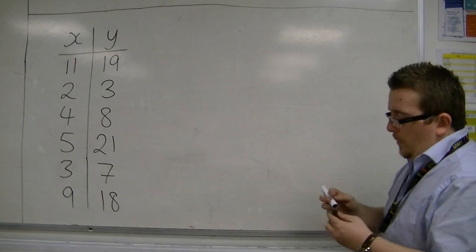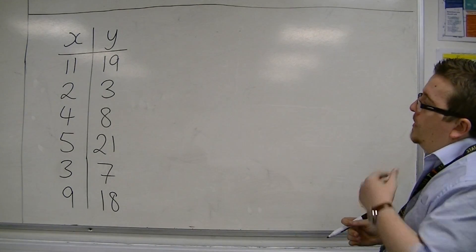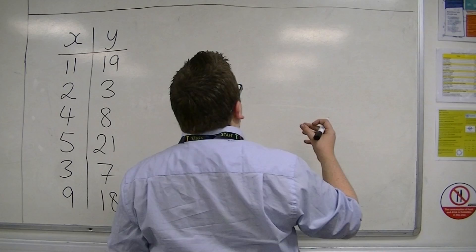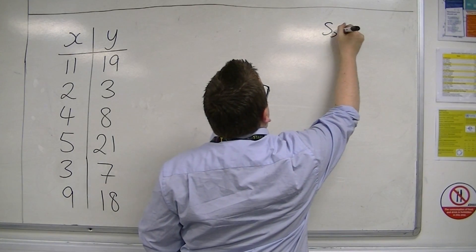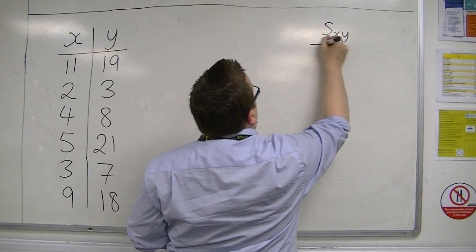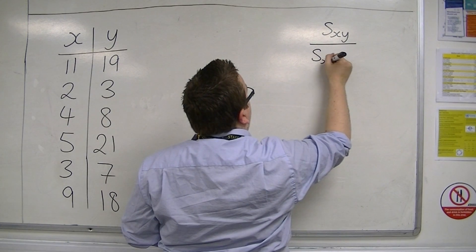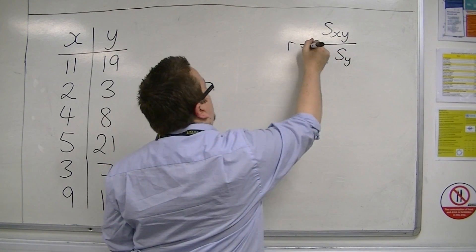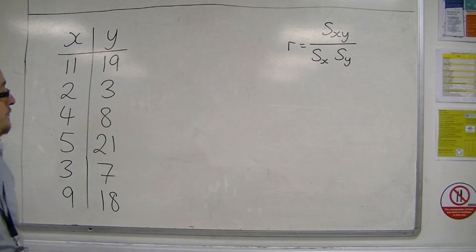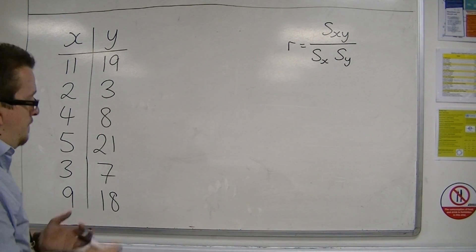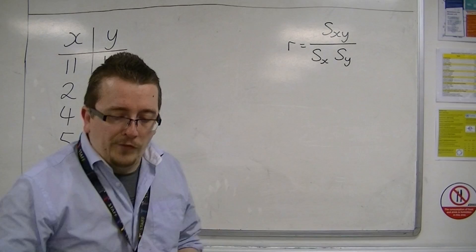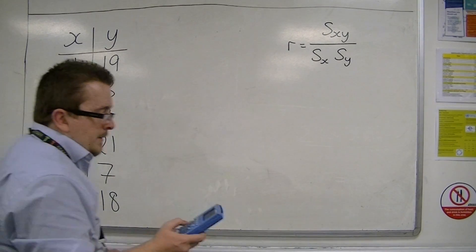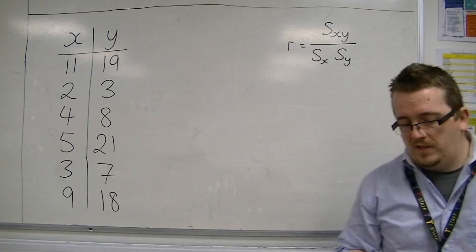Now what we're going to need to do is work out the covariance S_XY, and then we're also going to have to find out the standard deviation of X and the standard deviation of Y. So that R is equal to this. Okay, so I am going to be using the graphical calculator to help me, so we'll see how this goes.